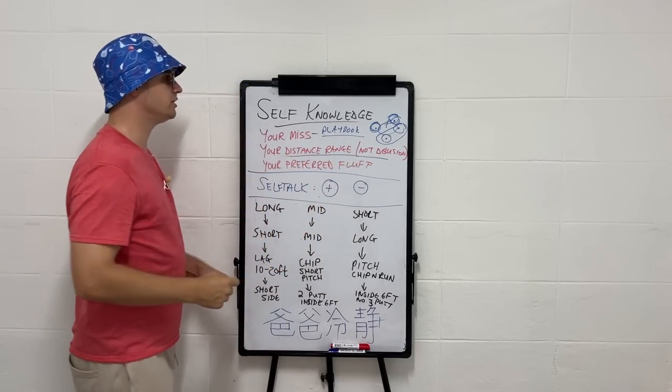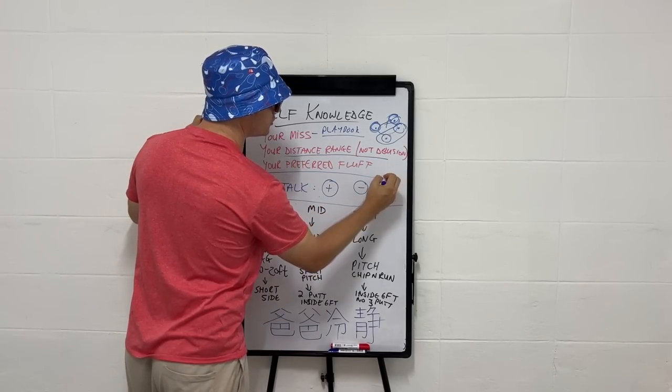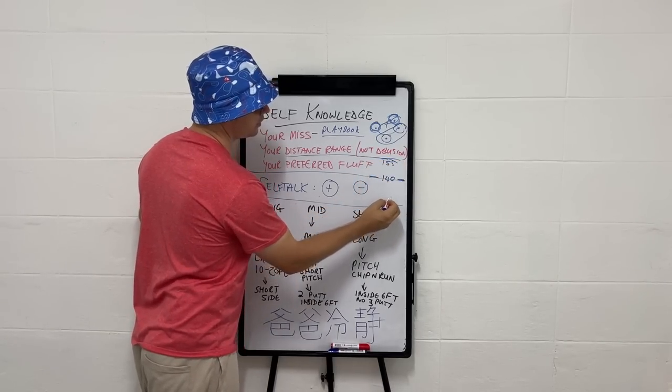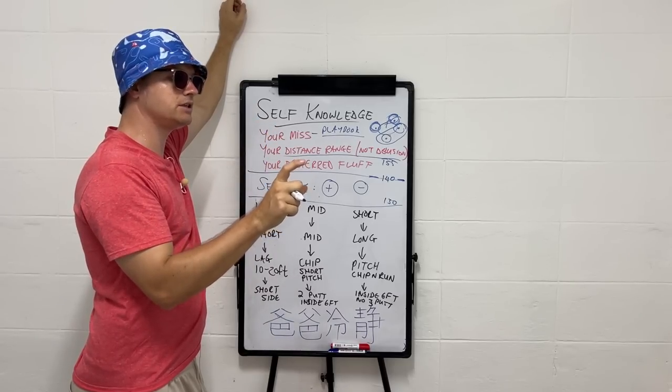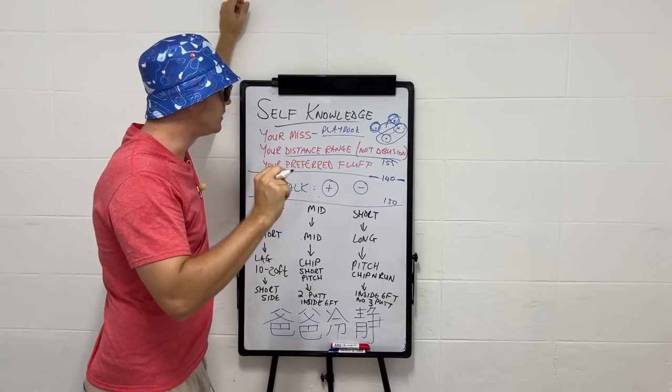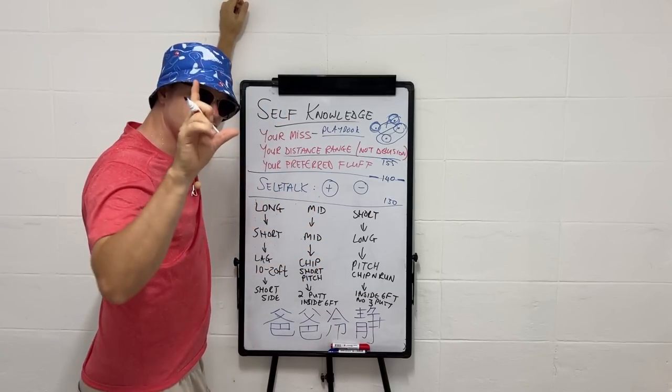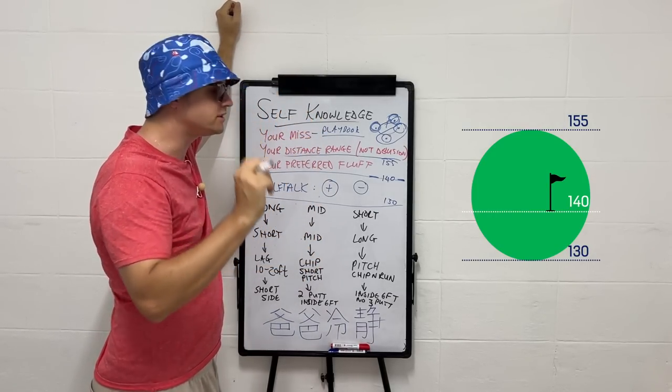Now you want to know your distance range, not the delusion range. The distance range. A pin is 140 yards away. You have the back of the green which is 155 and you have the front of the green which is 130. You want to know your distance range because potentially you don't have it very specific yet. As your handicap gets better, as you get more comfortable playing golf, you start to narrow your range down a little bit in terms of how far or how short one single club goes.